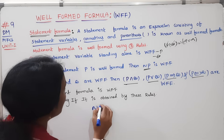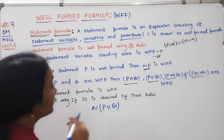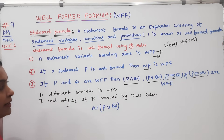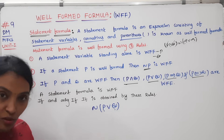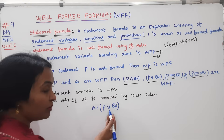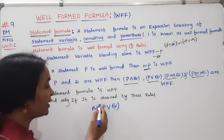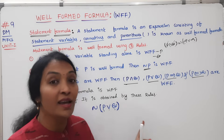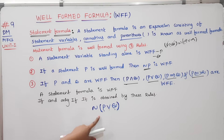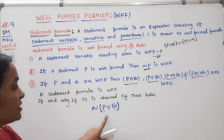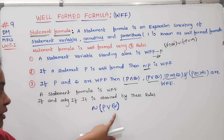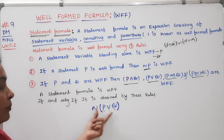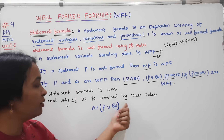Now, I will give ¬P∨Q. This is the statement. First, it is a statement formula — variables P and Q are the statement variables. Connectives: negation and 'or'. Parentheses: this bracket is complete, open and close. It satisfies the three conditions: P and Q are statements standing alone, negation P satisfies the second condition, and P and Q being well-formed means P∨Q is well-formed by the third condition.